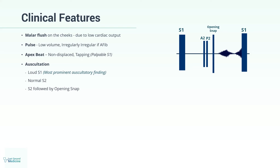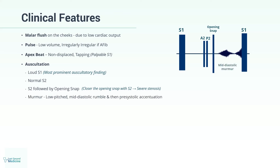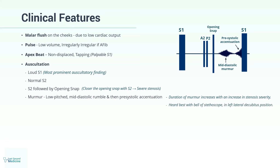The distance between S2 and the opening snap can give an indication as to the severity of the stenosis — the closer the opening snap follows S2, the worse the stenosis. The opening snap is followed by a low-pitched mid-diastolic rumble and then presystolic accentuation. The duration of the murmur increases with greater stenosis severity. The murmur is heard best with the bell of the stethoscope in the left lateral decubitus position, and accentuates when the breath is held in expiration.